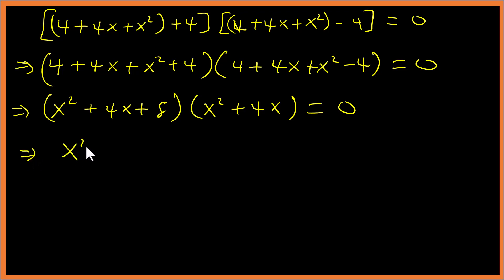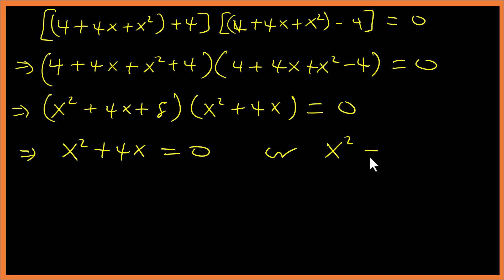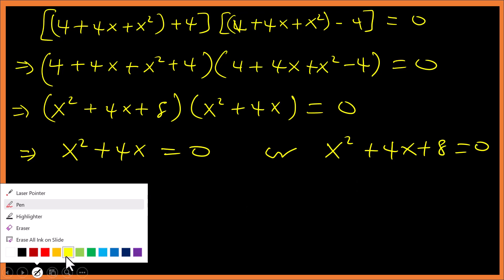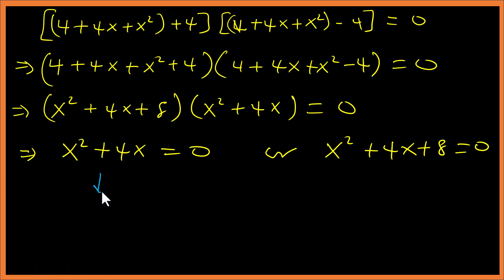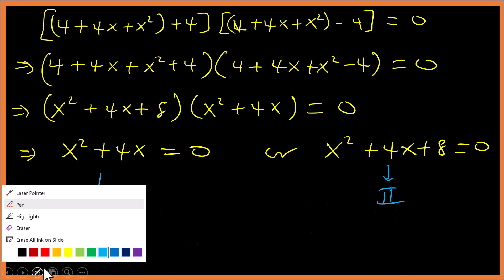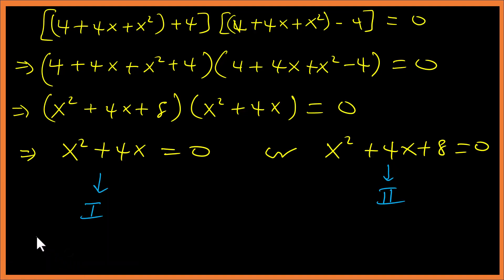So we have (x² + 4x + 8)(x² + 4x) = 0. Let's call x² + 4x = 0 equation I, and x² + 4x + 8 = 0 equation II.